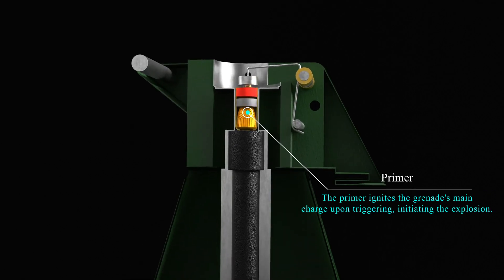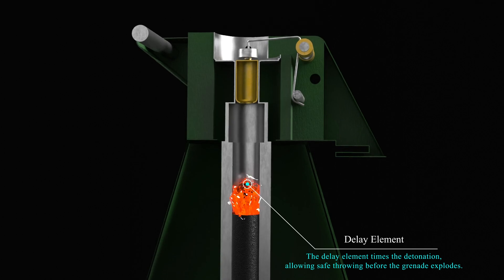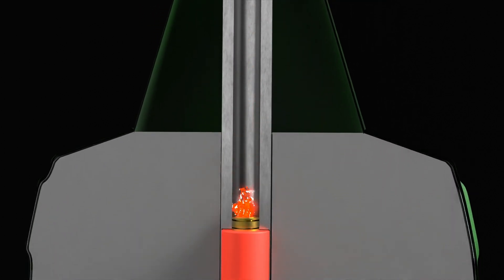The primer is a small explosive seated at the top of the grenade, akin to a bullet. Once ignited, it generates a spark that activates the delay element. The delay element ignites and burns for a predetermined duration, usually lasting between 4 to 5 seconds.